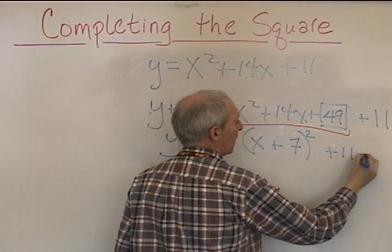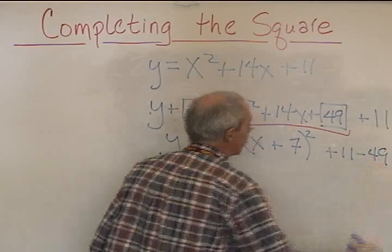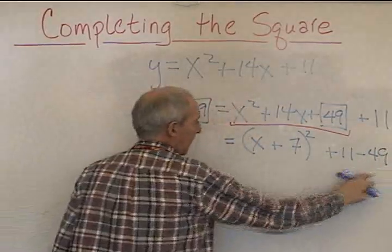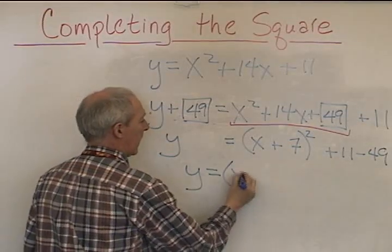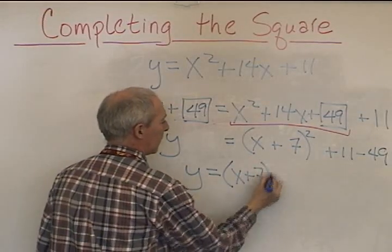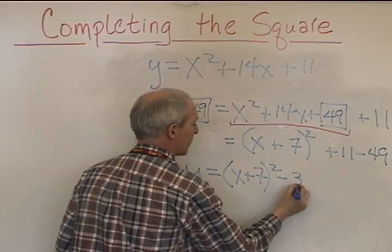Positive 11 minus 49, this becomes negative 38. y equals (x + 7)² minus 38.